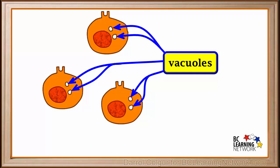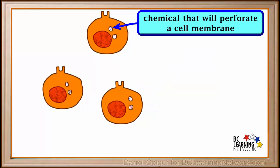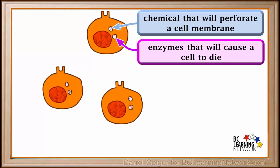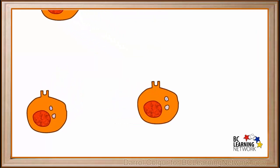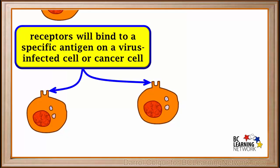Like all cells, killer T cells have vacuoles. Some of the vacuoles are filled with chemicals that will perforate or put holes in a cell membrane — represented as little blue particles here. Other vacuoles are filled with enzymes that will cause a cell to die. The membranes around the vacuoles prevent these chemicals from affecting the killer T cell itself. The newly formed killer T cells move out, looking for cells to attack. The new killer T cells are equipped with receptors that will bind to the same antigen that activated their parent cell.